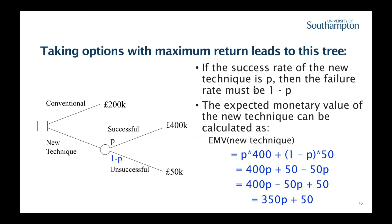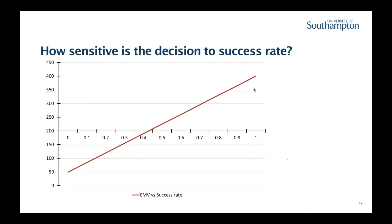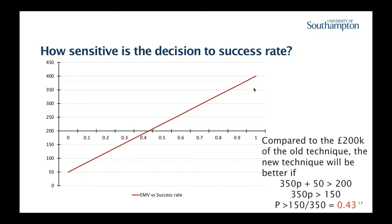So we get 350P + 50 (in thousands). If that is bigger than 200,000, we would go with the new technique. Graphically, you can draw it: depending on P, we get the expected monetary value. Drawing the axis at 200 (thousand), above the axis the new technique is more profitable; below it, the conventional technique is more profitable. From the graph, the crossover is a little over 0.4, and if you calculate it properly, the difference — where one technique should be used versus the other — happens at P = 0.43.